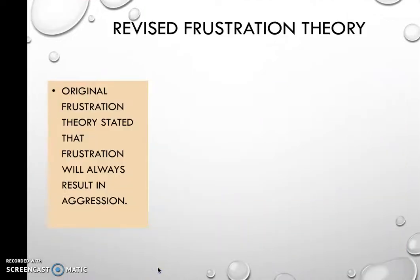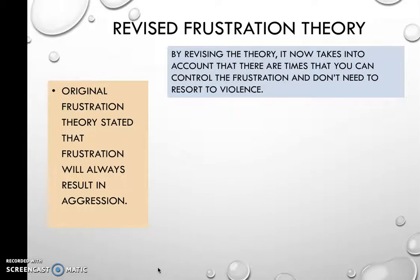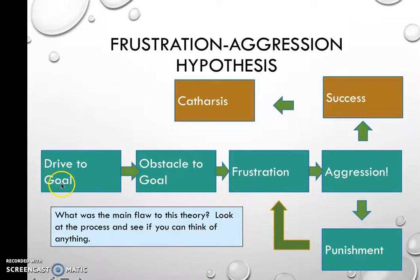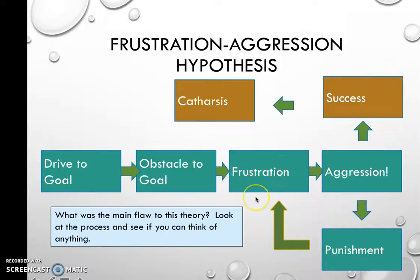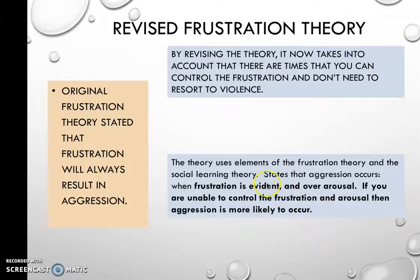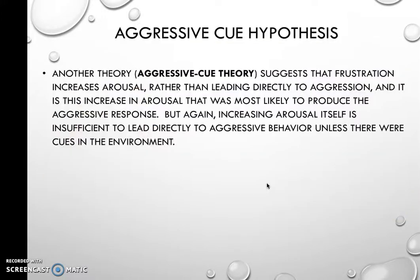Now there is the revised frustration-aggression theory, which is simply a revision of the previous one. It takes into account that there are times when you can control the frustration and don't resort to violence. So you still have the drive, the obstacle, and then the frustration — but it doesn't say that frustration will always end in aggression. It suggests that frustration can sometimes be controlled, and therefore you can move on beyond it.